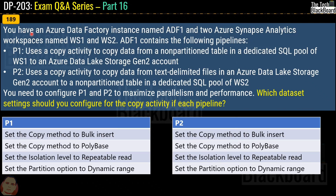Question number 189. You have an Azure Data Factory instance named ADF1 and two Azure Synapse Analytics workspaces named WS1 and WS2. ADF1 contains two pipelines: P1 uses a copy activity to copy data from a non-partitioned table in a dedicated SQL pool of WS1 to an Azure Data Lake Storage Gen2 account; P2 uses a copy activity to copy data from text-delimited files in an Azure Data Lake Storage Gen2 account to a non-partitioned table in a dedicated SQL pool of WS2.